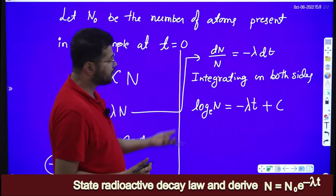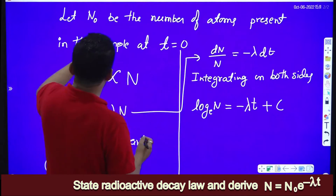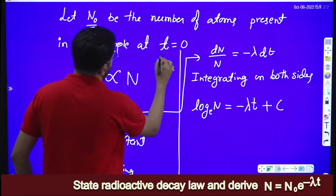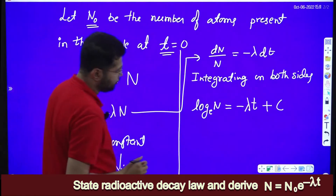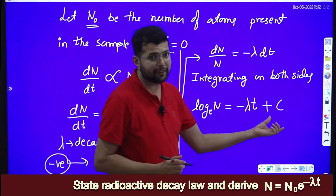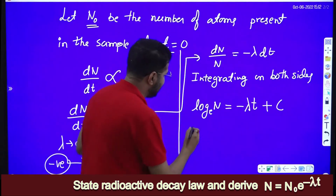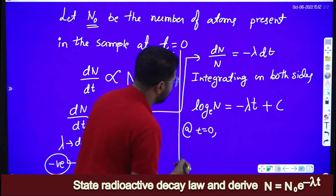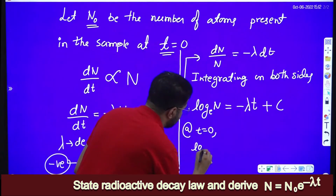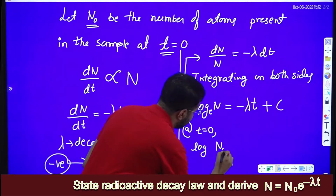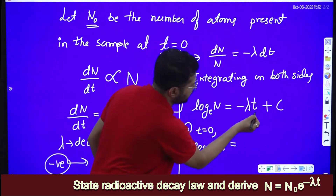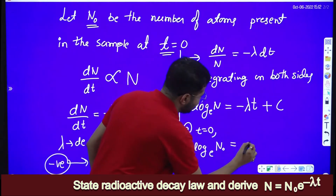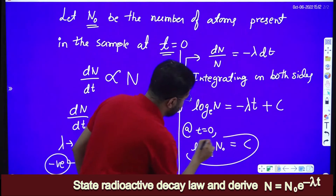Because the limits are not there, we apply the initial condition: at t is equal to 0, N is equal to N naught. We have to find the value of C. Substituting, log N naught to the base e equals minus lambda times 0 plus C. This term vanishes, so log N naught will be equal to C.